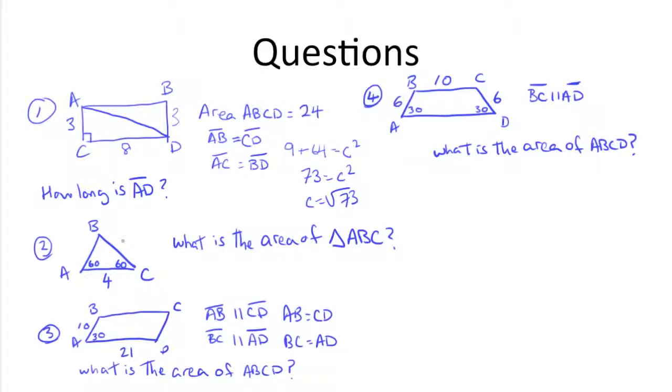What is the area of triangle ABC? Well, if these two angles are 60, we know this angle has to be 60, because the interior angles of a triangle have to add up to 180. That's the case. This is an equilateral triangle, which means that all these sides are equal to 4, since AC is 4.